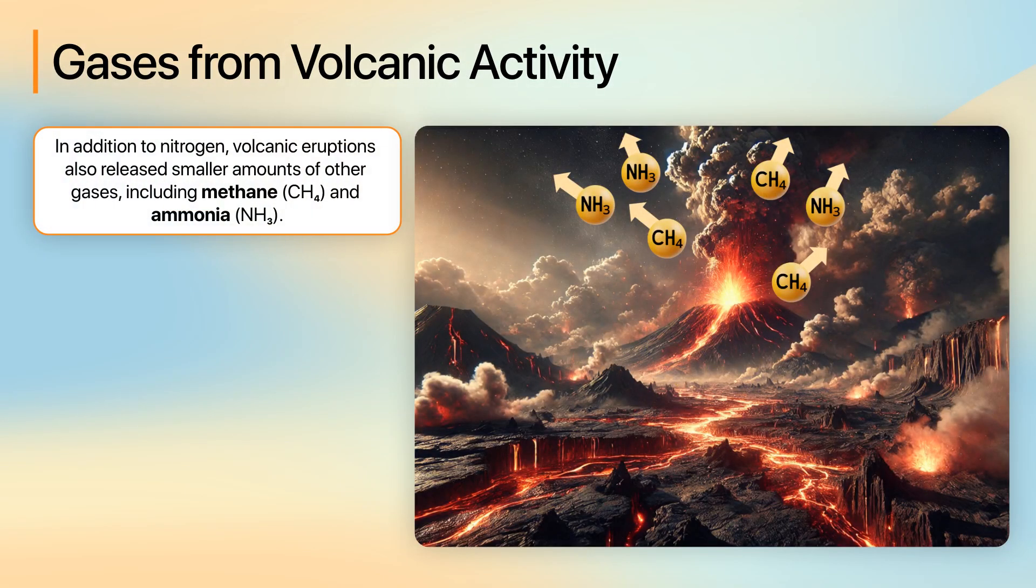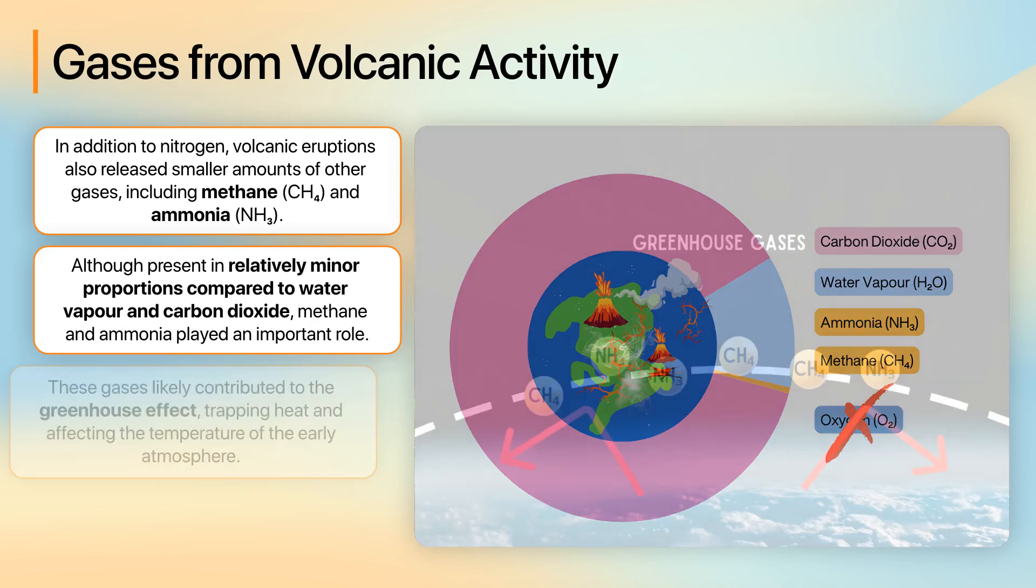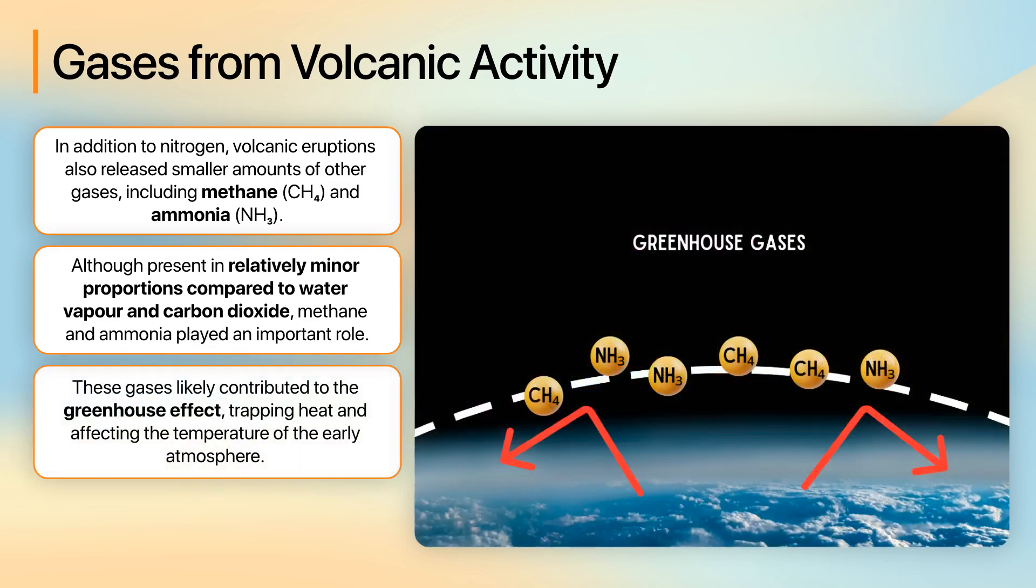In addition to nitrogen, volcanic eruptions also released smaller amounts of other gases, including methane (CH4) and ammonia (NH3). Although present in relatively minor proportions compared to water vapour and carbon dioxide, methane and ammonia played an important role. These gases likely contributed to the greenhouse effect, trapping heat and affecting the temperature of the early atmosphere.